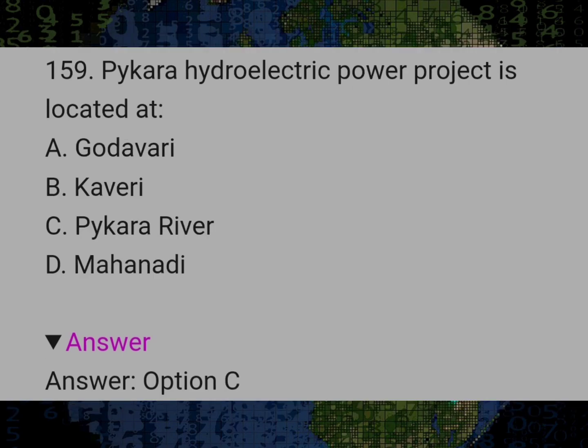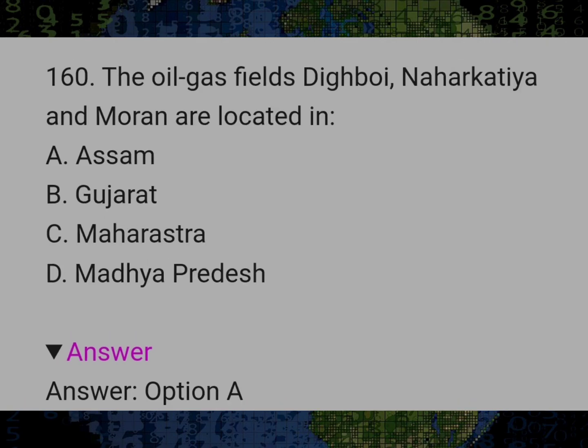Paiqara Hydroelectric Power Project is located at? Answer C: Paiqara River. The oil and gas fields Digboi, Nahar Katia and Moran are located in? Answer A: Assam.